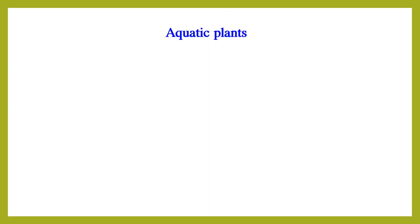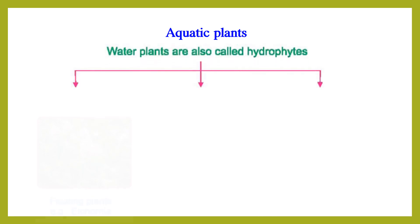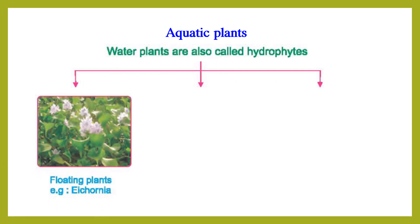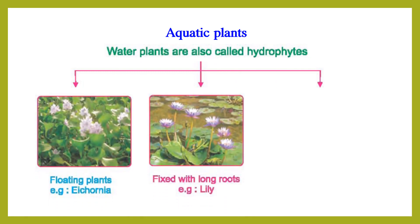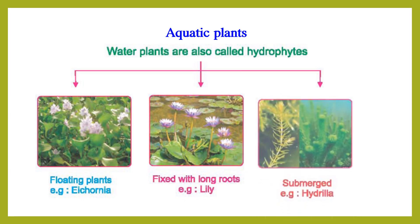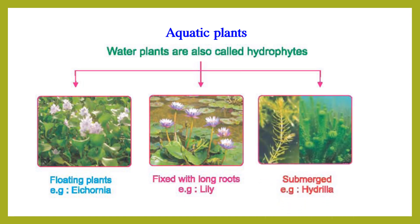Now, aquatic plants are of three types: they are floating plants, plants fixed with long roots to the bottom, and submerged plants.